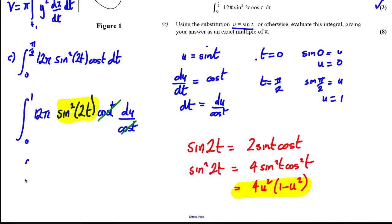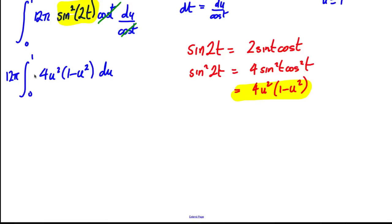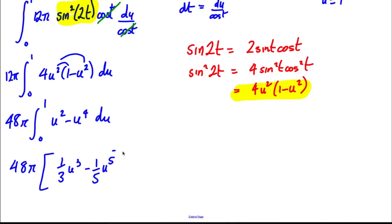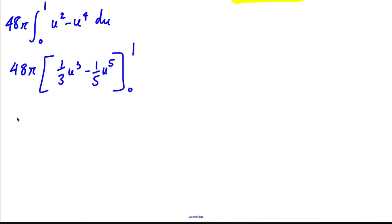So we have the integral between 0 and 1, take that 12π out, sin²(2t) we said is 4u²(1 - u²) du. Factor out the 4, we have 48π times the integral between 0 and 1 of u²(1 - u²) du, which is u² - u⁴ du. Now let's integrate: it's u³/3 - u⁵/5 between 0 and 1.